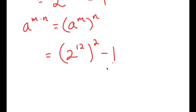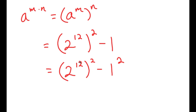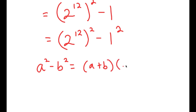Now, I'm going to rewrite 1 as 1 squared. So now I have 2 to the power of 12, to the power of 2, minus 1 squared. And now I can use the property that states that if I have something in the form a squared minus b squared, this is equal to a plus b times a minus b.